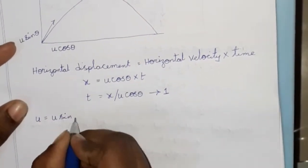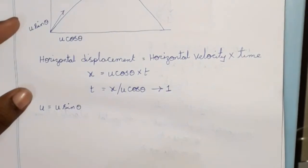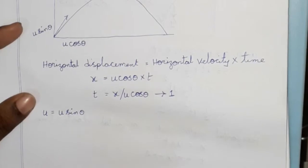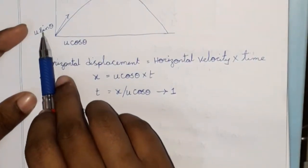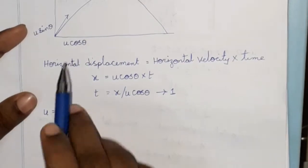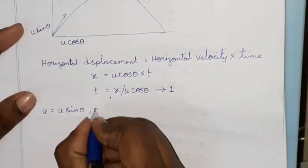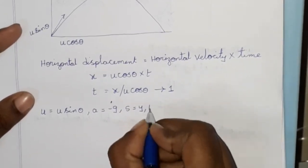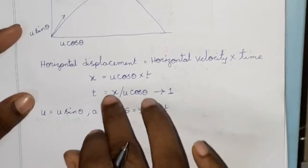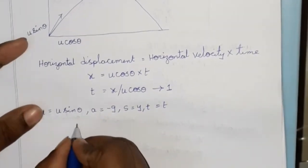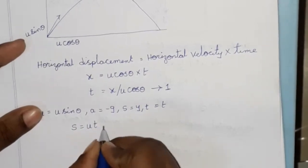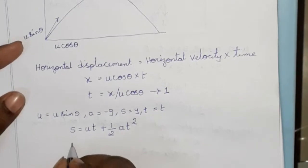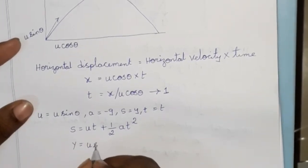Now putting in the parameters: for vertical projection, u is equal to u·sinθ, and for horizontal projection, u is equal to u·cosθ. So a equals minus g, s equals y, t equals t. Substituting into the formula s = ut + ½at², we get y equals u·sinθ into t minus ½g·t².